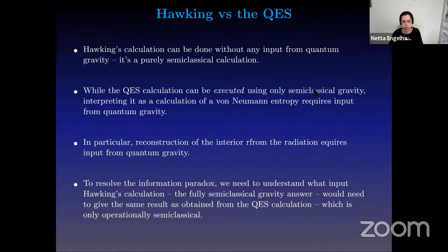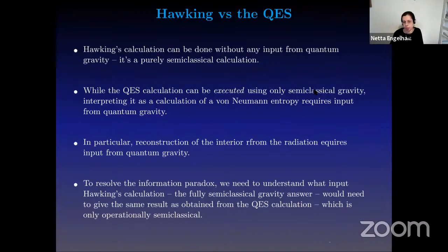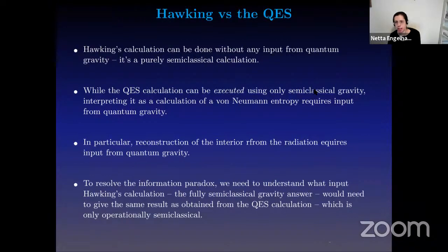In particular, one of the important aspects is that if we want to reconstruct the interior of the black hole from the Hawking radiation, this does require some sort of input from quantum gravity. In my opinion, what we need to do to resolve the information paradox is to understand what additional input Hawking's calculation — which is a fully semi-classical calculation — would need in order to give the same result that we obtained from the quantum extremal surface calculation, which needs some quantum gravity input. So what is that input? That is one of the questions we need to answer in order to resolve the information paradox.